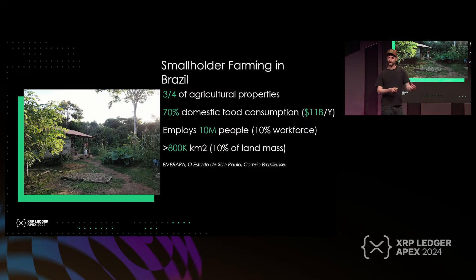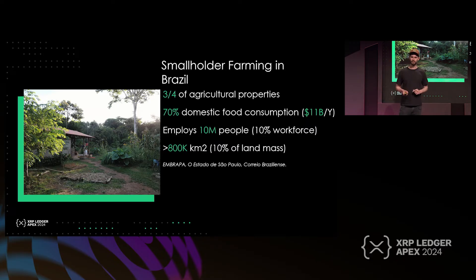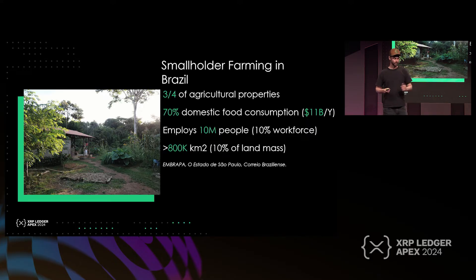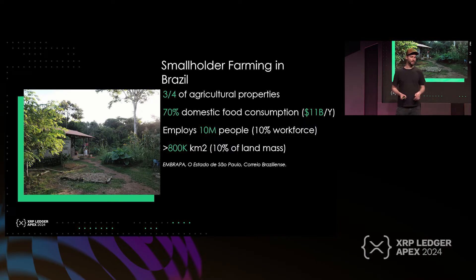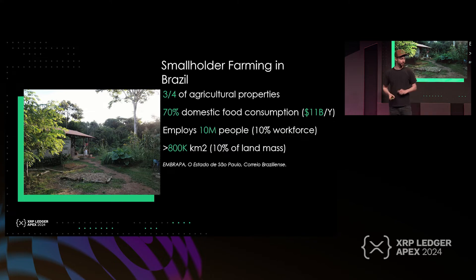70% of Brazilian food that they domestically consume comes from smallholder farming, which — taken from the source — represents a conservative estimate of $11 billion per year. This doesn't even count what is exported, which is also in the billions. It employs 10 million people in Brazil — roughly 10% of Brazil's workforce — and they cover over 800,000 square kilometers of land.